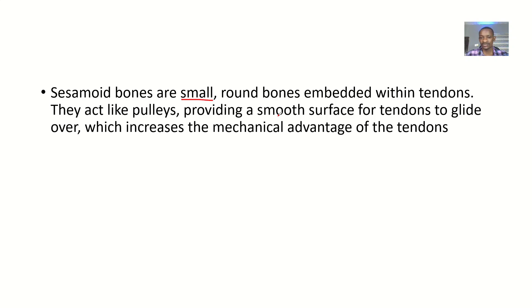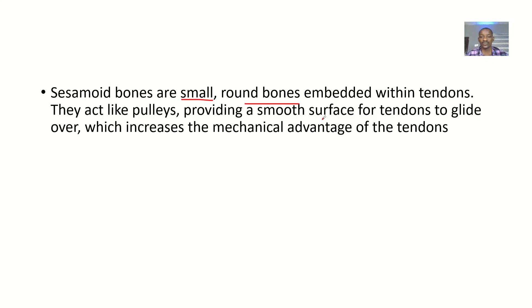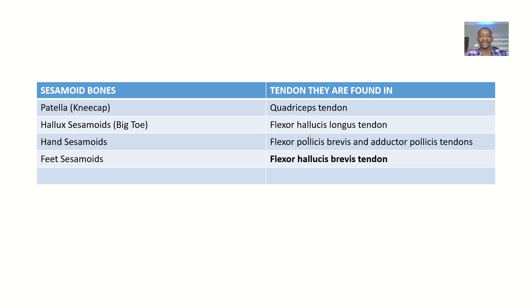A sesamoid bone is a small and rounded bone that is embedded within tendons. You can see here that this is a quadriceps tendon and the patellar bone is inside the tendon. These bones actually act as pulleys — providing a smooth surface for the tendons to glide over.